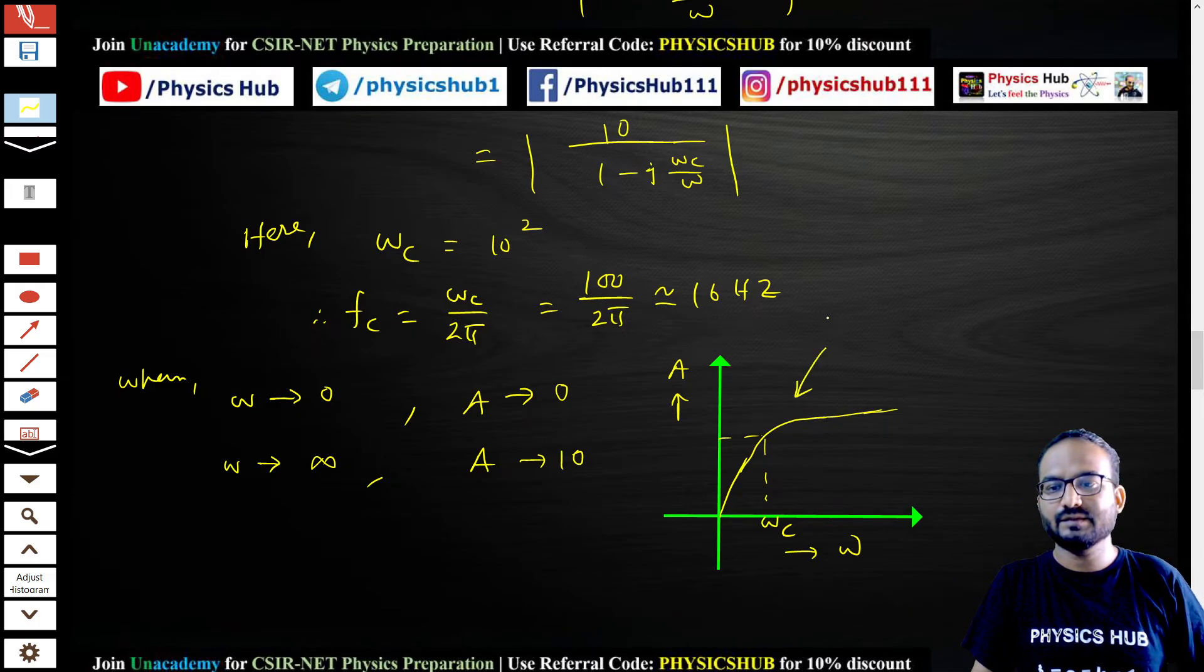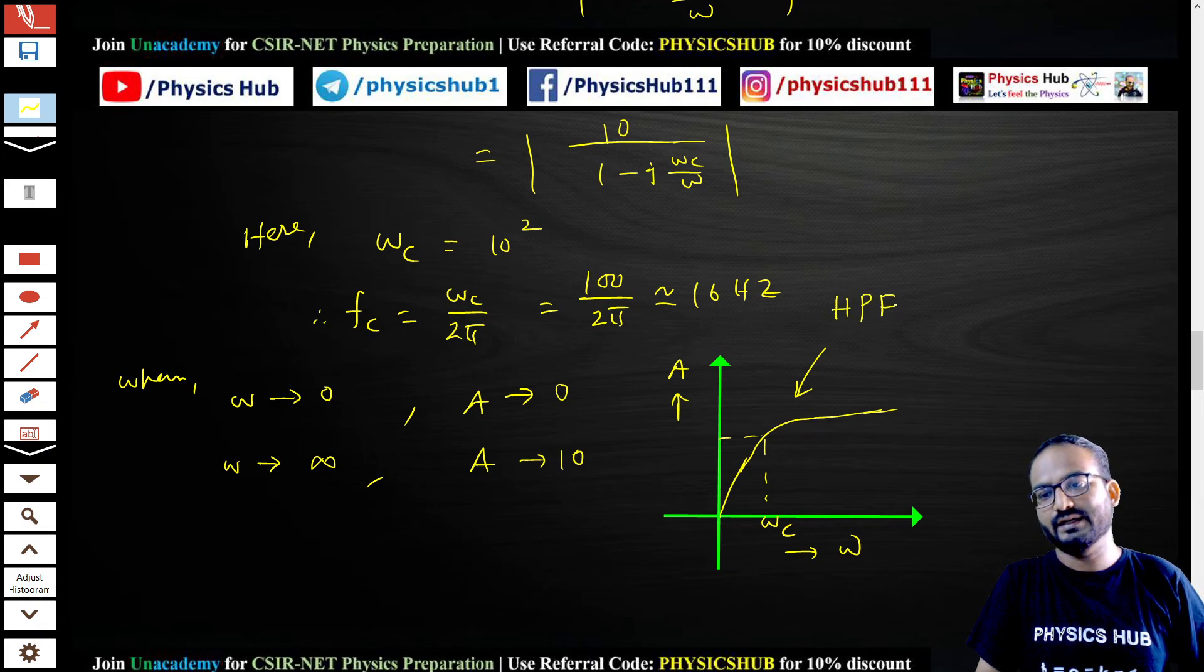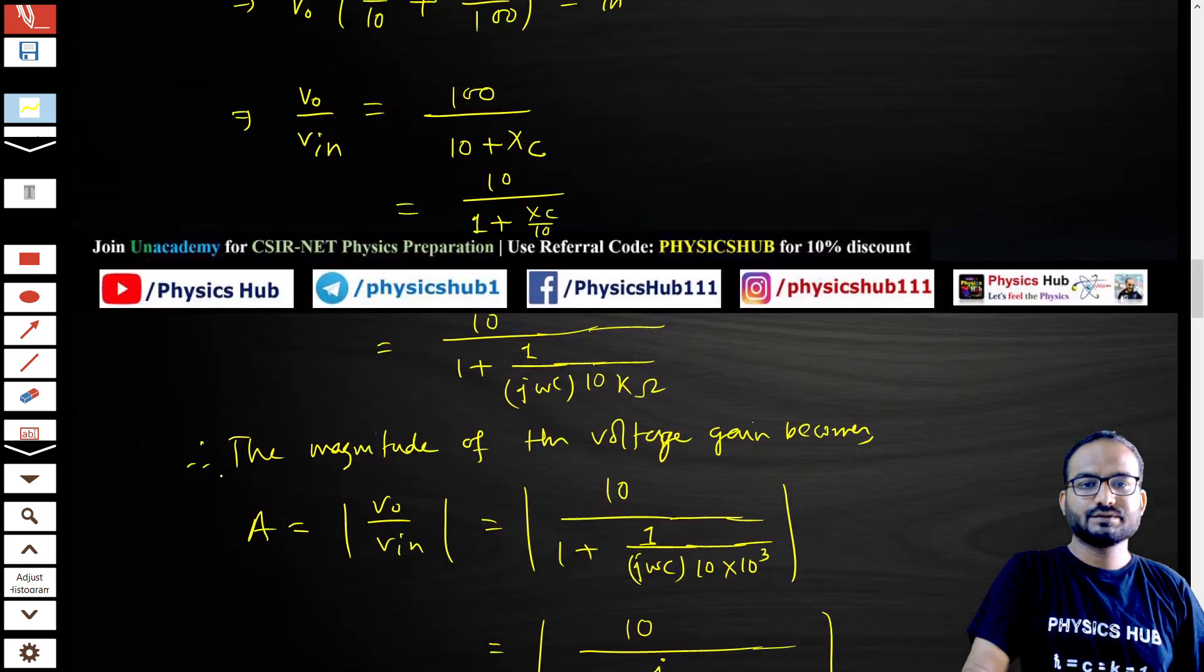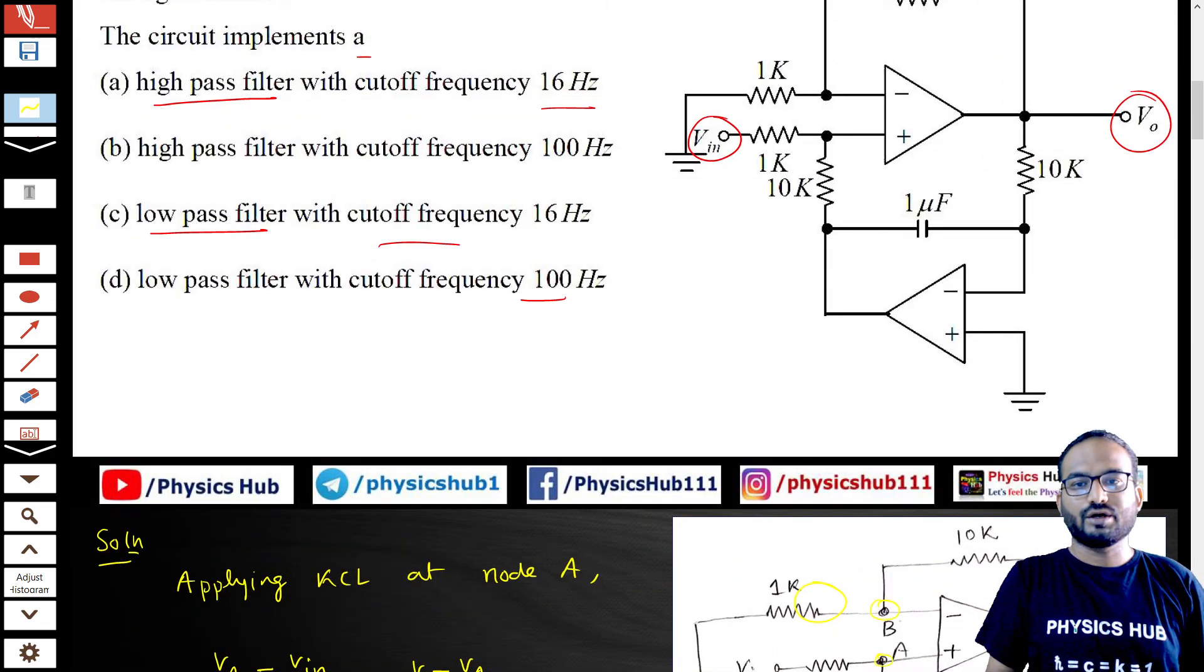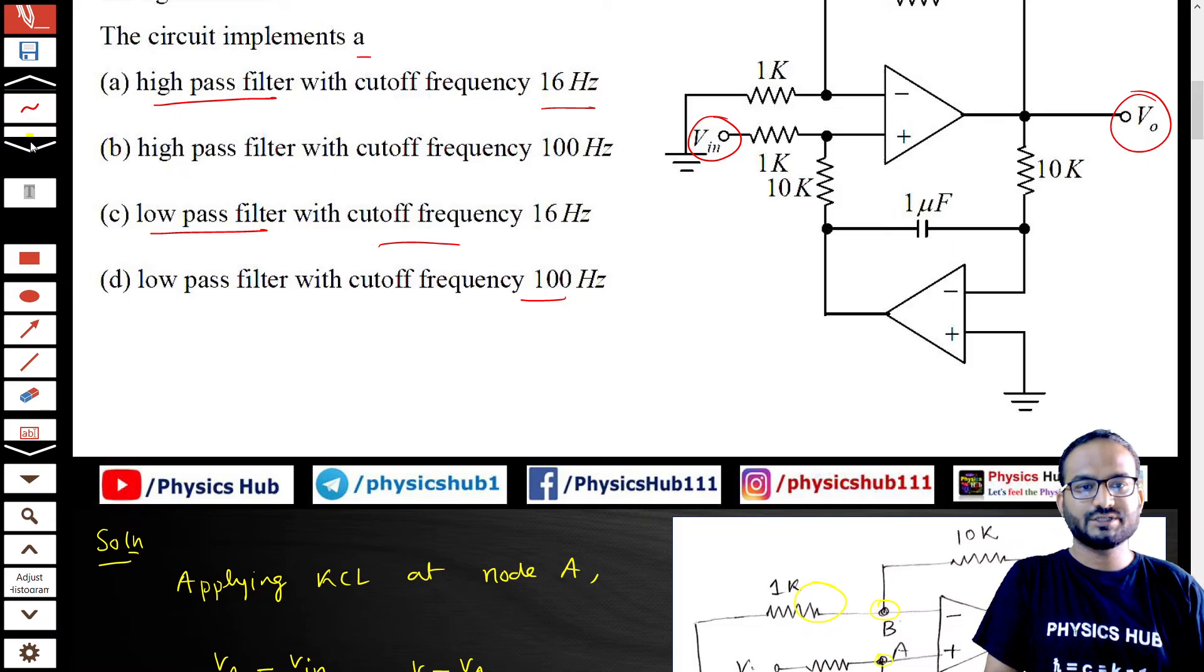This is nothing but it is allowing the high frequency to pass. So this is nothing but a high pass filter with frequency 16 hertz. Let's look at the option: it is a high pass filter with cutoff frequency of 16 hertz, correctly matching with option A.